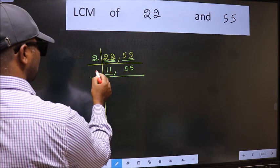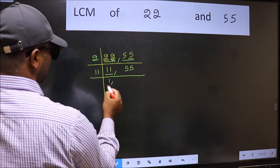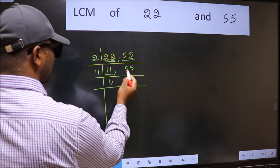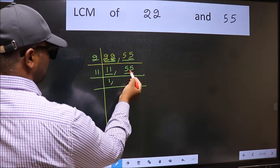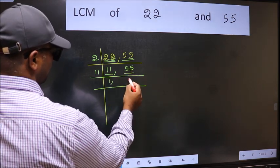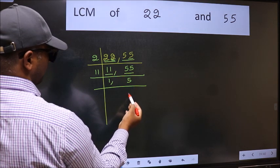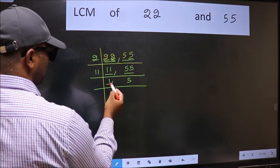Now here we have 11. 11 is a prime number, so 11 times 1 is 11. The other number is 55. When do we get 55 in the 11 table? 11 times 5 is 55. Now we got 1 here.